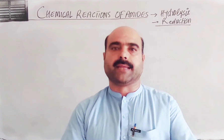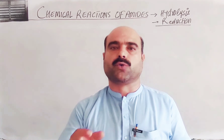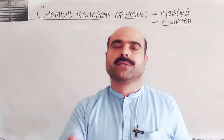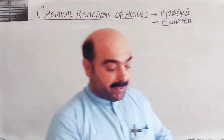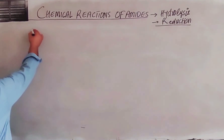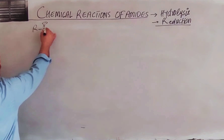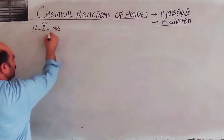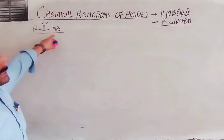Amides are the derivatives of carboxylic acids. Such derivatives of carboxylic acids are called amides. Amides have the general formula of R-C(=O)-NH2. This is the general formula for amides.